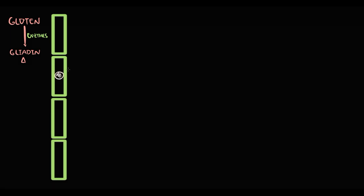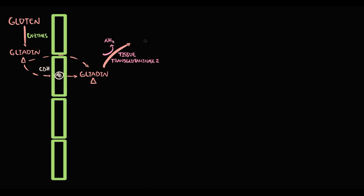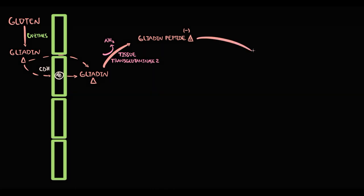Once gliadin enters the duodenum, it is transported from the lumen of the small intestine through transcellular and paracellular pathways into the lamina propria. Once in the lamina propria, gliadin undergoes deamination by a specific enzyme called tissue transglutaminase 2. This enzyme converts neutrally charged gliadin into negatively charged gliadin, which is the major pathogenic factor triggering the immune response in celiac disease.